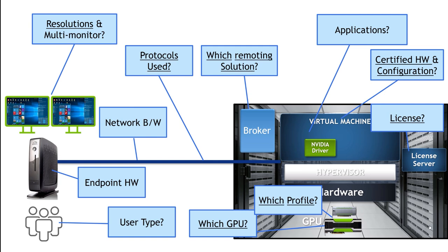To isolate bottlenecks in the pipeline, try reducing to one monitor to see if experience improves, swap a thin client for a standard PC temporarily, or test from within an office on the local network to rule out network bandwidth as the issue. The entire pipeline — GPU, VM, broker, protocol, network, and endpoint — must be optimized to achieve a good end user experience.